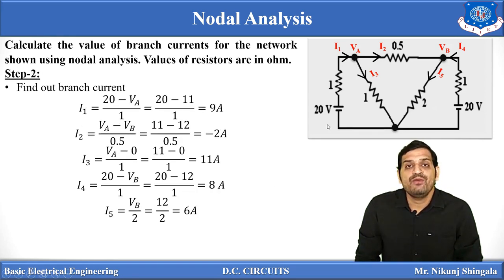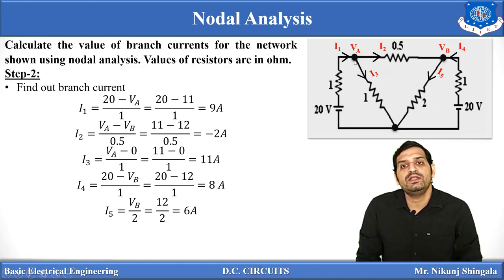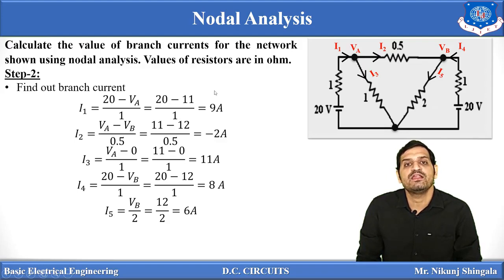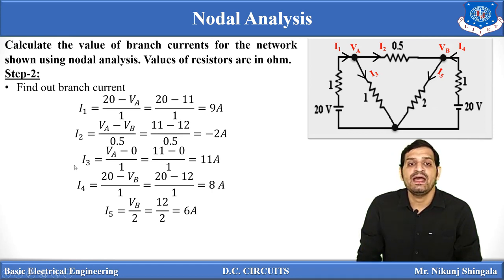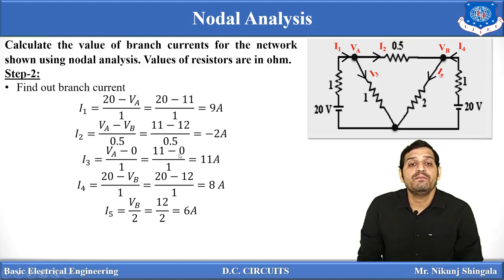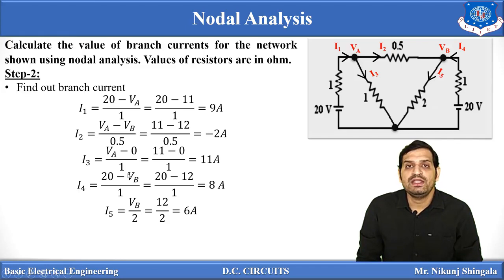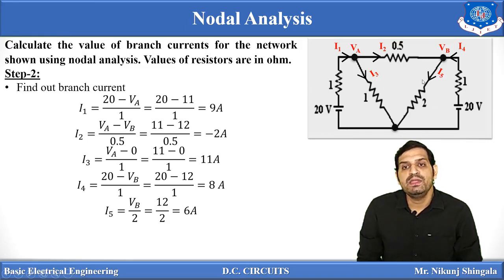Now determine all branch currents: I1 = (20 − VA)/1 = (20 − 11)/1 = 9 A. I2 = (VA − VB)/0.5 = (11 − 12)/0.5 = −2 A. I3 = VA/1 = 11/1 = 11 A. I4 = (20 − VB)/1 = (20 − 12)/1 = 8 A. I5 = VB/2 = 12/2 = 6 A.